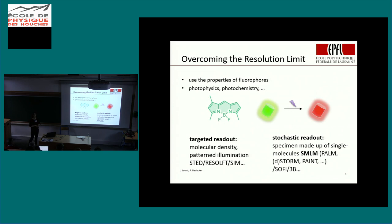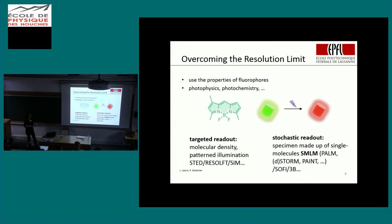There are two different categories of how you can overcome the resolution limit. One is targeted readout, where you look at your sample as being covered by a density of molecules and use patterned illumination — methods like STED microscopy and SIM. I will focus more on methods that use a stochastic readout, where you treat your sample as being covered by individual single molecules. The most prominent is single-molecule localization microscopy, but there are also others such as SOFI and 3B microscopy.